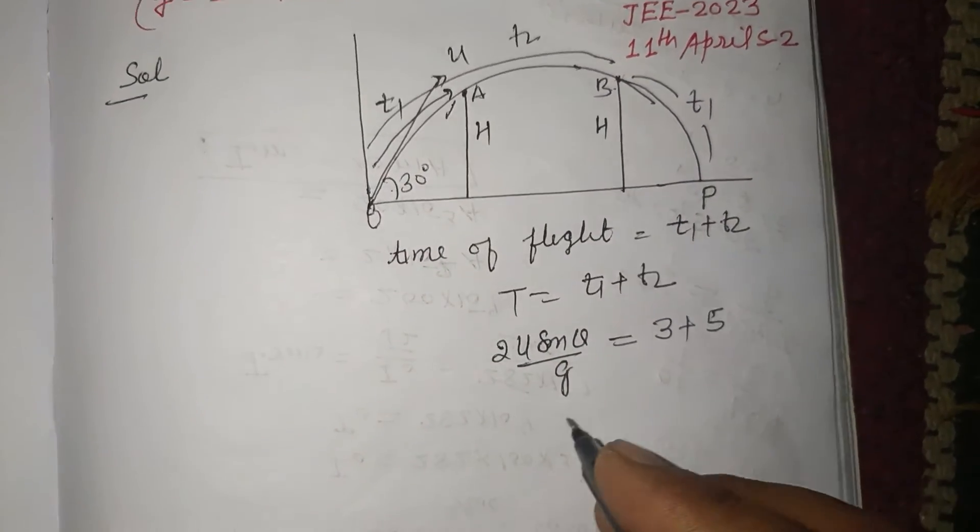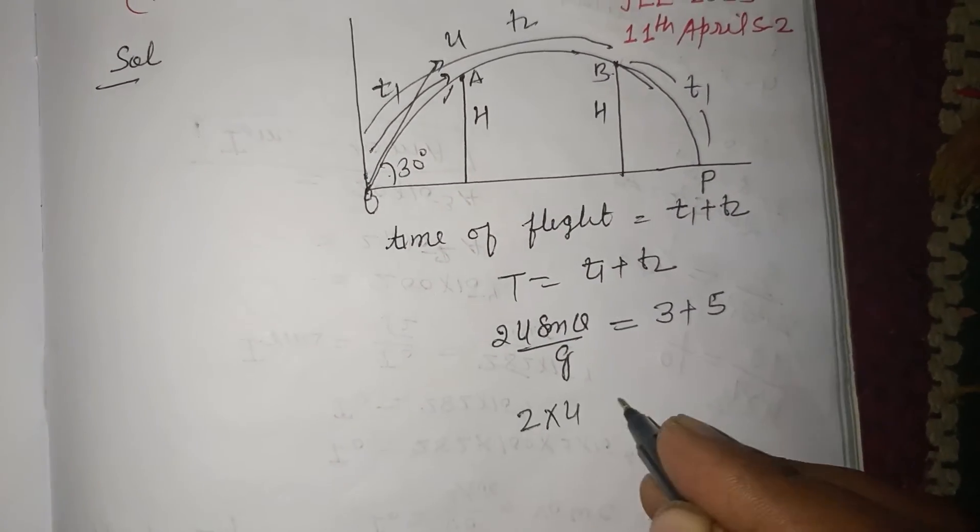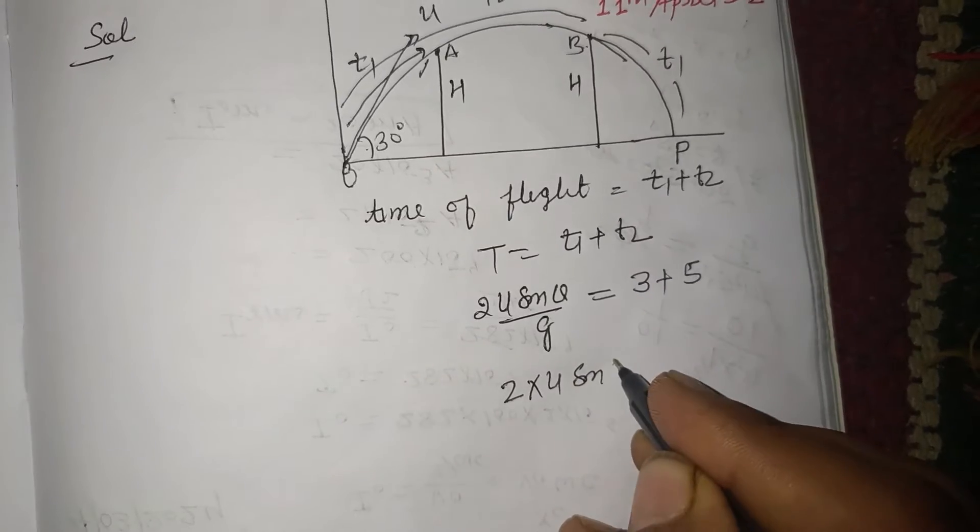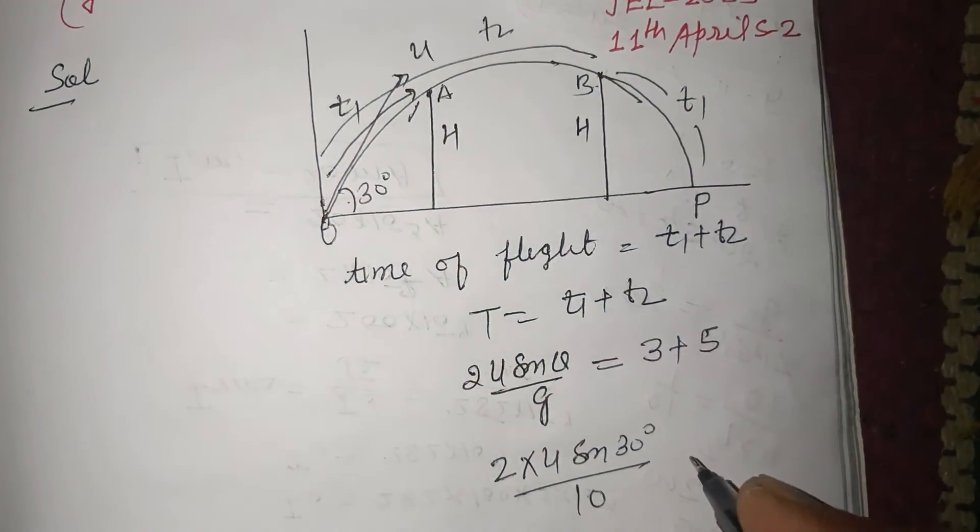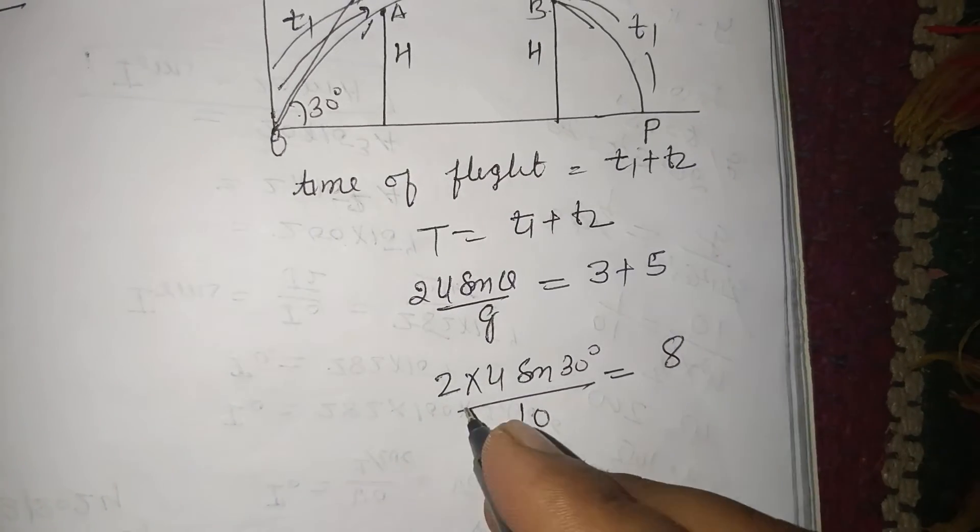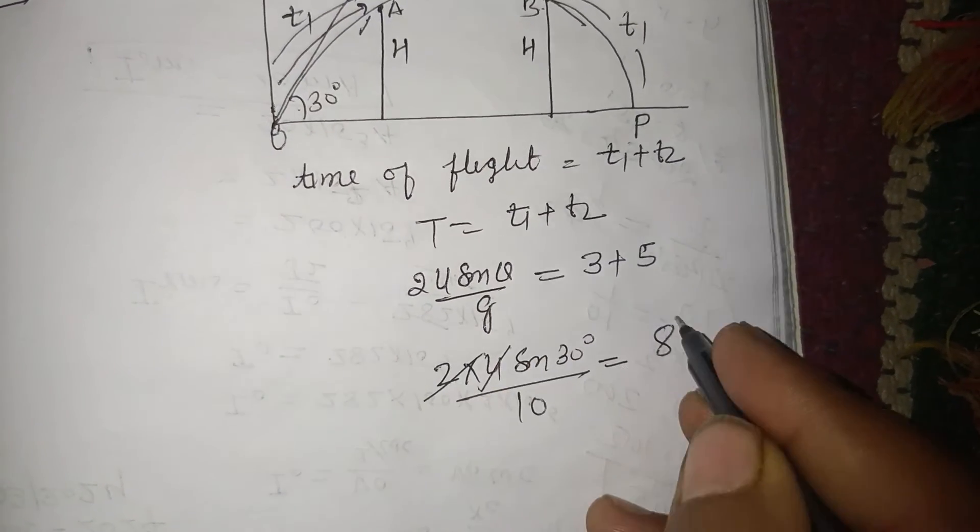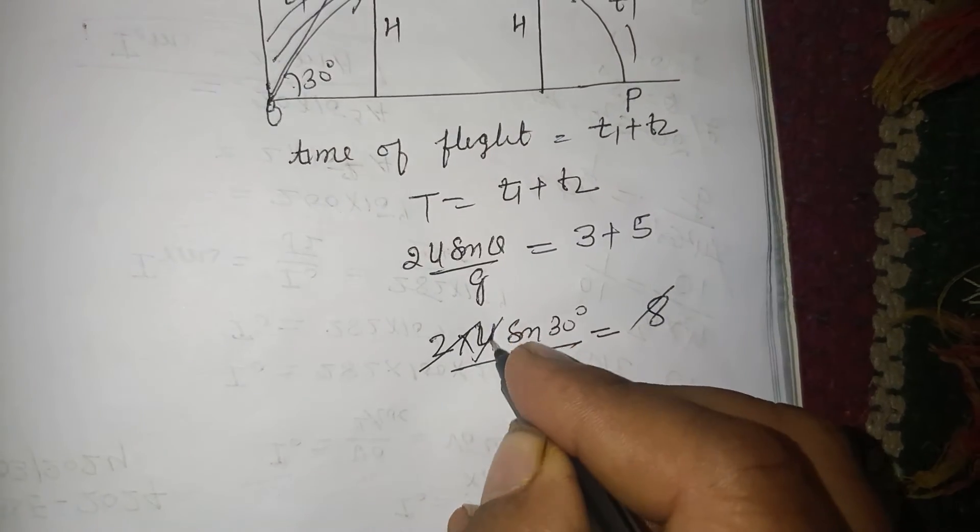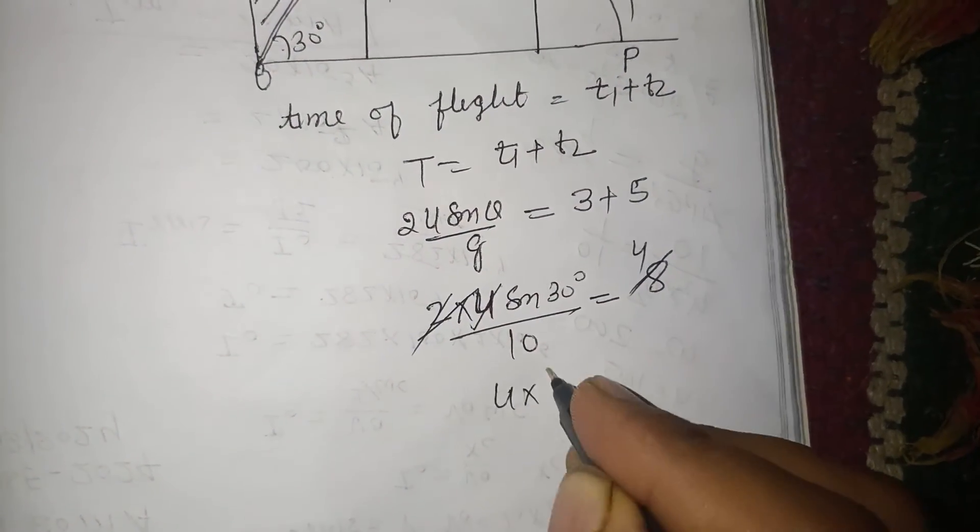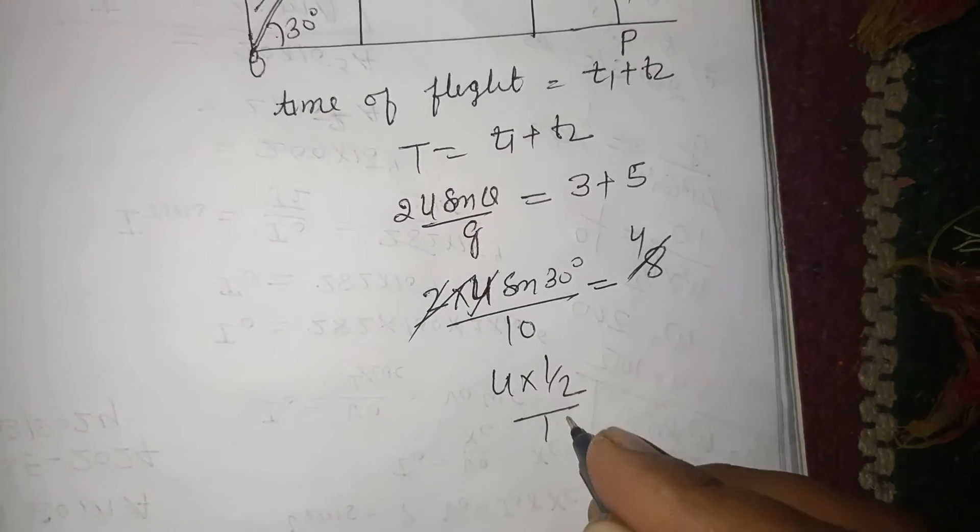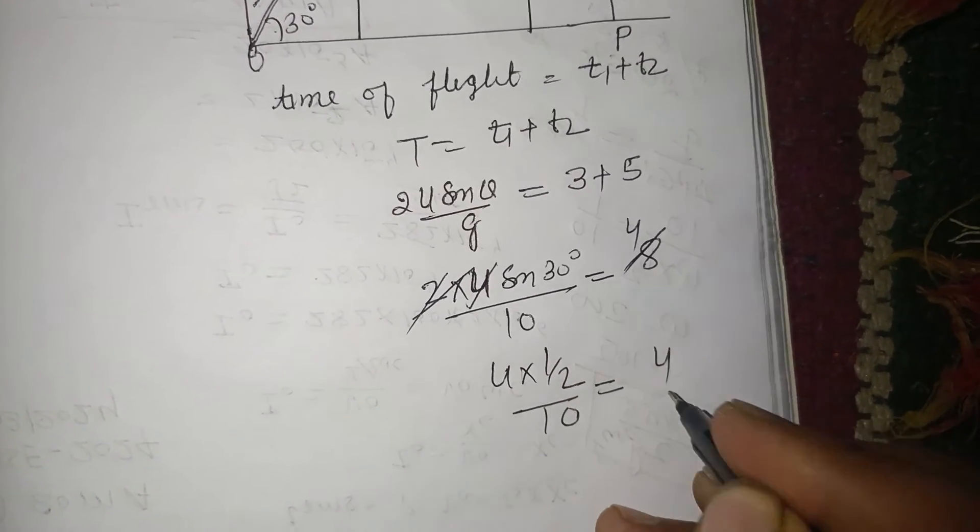Therefore, 2u sin θ - theta is 30 degrees - upon g. g is given as 10, and this is 8. This cancels. Sorry, this is u, not 2. So 4u sin 30, which is 1/2, upon 10 equals 4. u over 20 equals 4.